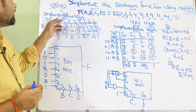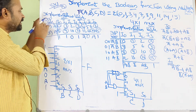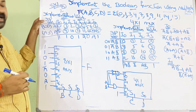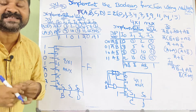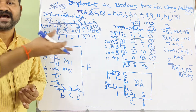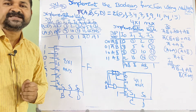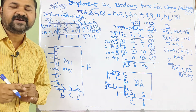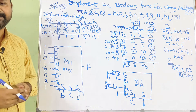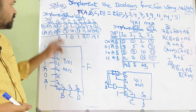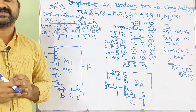Now let's look at the implementation table. The input variable is a. If a equals 0, we write it as a-bar, and if a equals 1, we write it as a. We have 8 inputs: i0 through i7. In sum of products form, actual variable means a and complemented variable means a-bar.